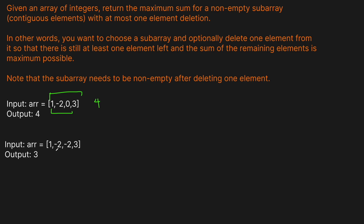What happens if there are two negatives? We can only delete one. With the array [1, -2, -2, 3], you'd want to take the smaller one if you have a choice, but sometimes you don't. We don't need to sum across both negatives — we can just take the subarray [3] since it's the maximum value. We don't have to delete an element; deletion is optional. If all elements are positive, you'd just sum the whole subarray.